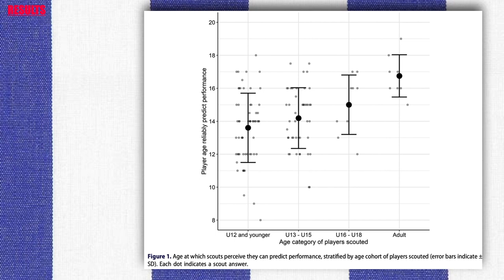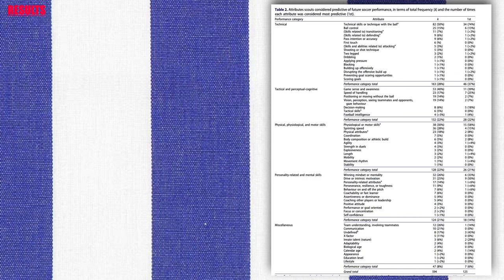The attributes that scouts considered predictive of future performance were very similar across age cohorts, so results are presented for the total sample. The table presents the frequency with which each attribute was mentioned and the number of times each attribute was considered most predictive. After grouping similar answers together, a total of 59 attributes were identified. The nine most frequently named attributes were: technical skills or technique with the ball, game sense and awareness, physiological or motor skills, sprinting speed, winning mindset or mentality, drive or intrinsic motivation, ball control, speed of handling, and physical attributes.